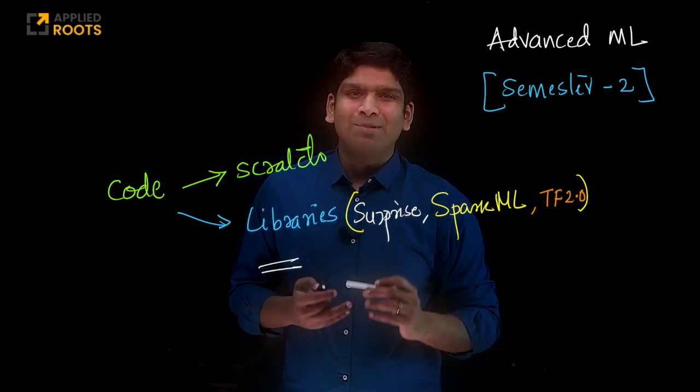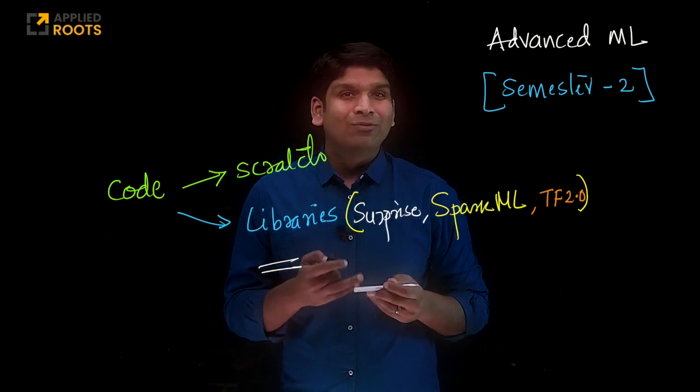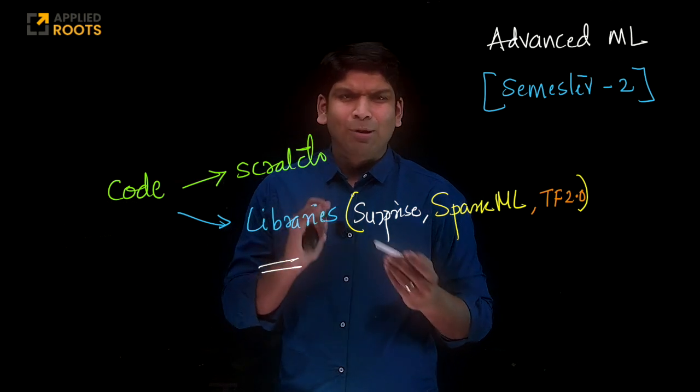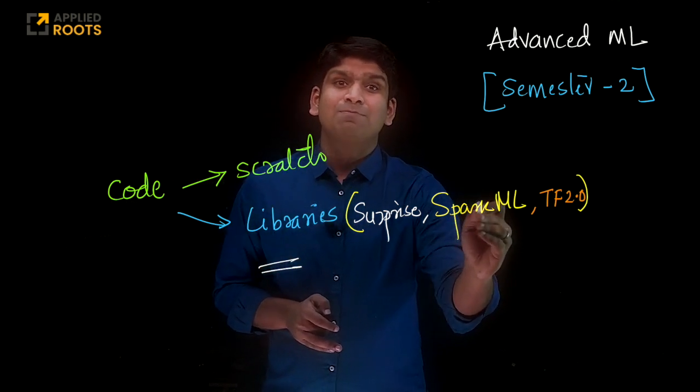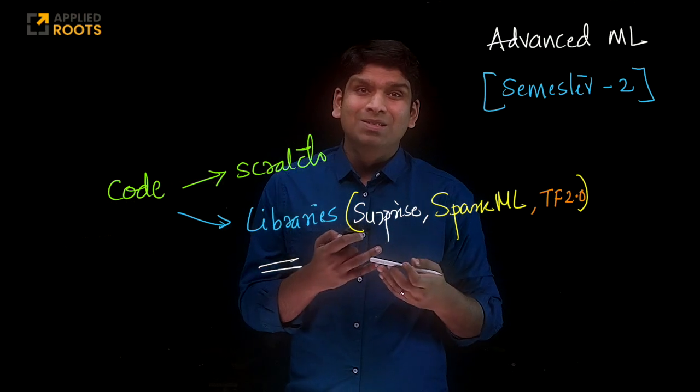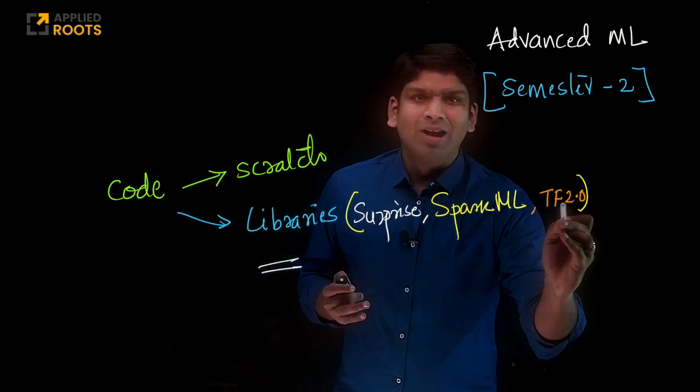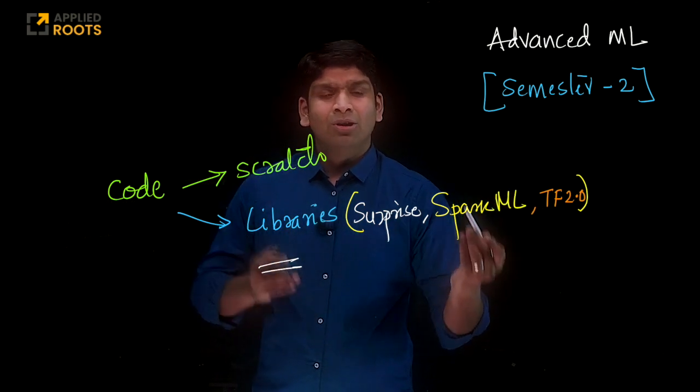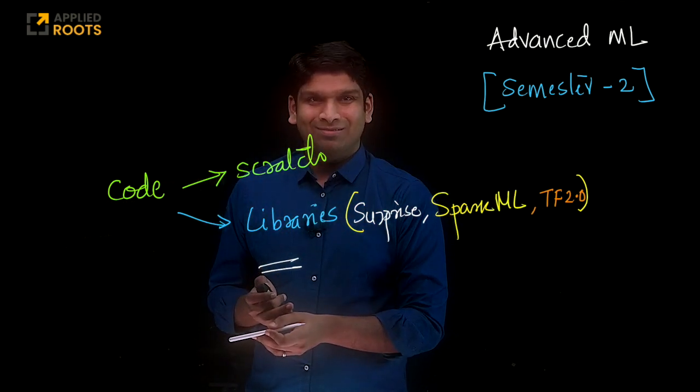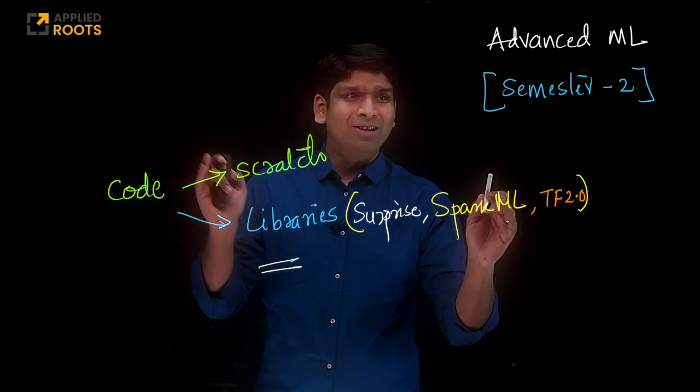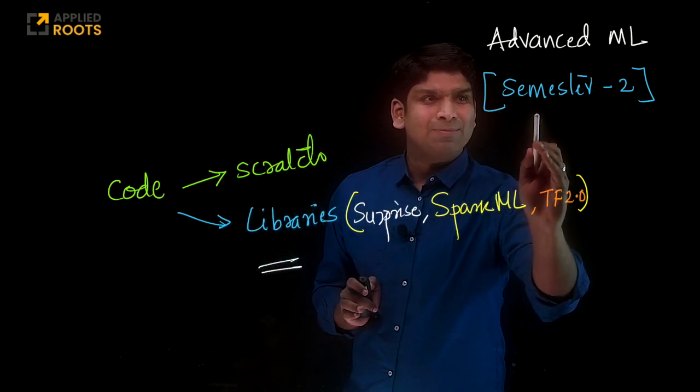There is a very popular library called Surprise which is often used for recommender systems. Similarly, we will see how we can use Spark ML to build recommender systems at large scale, at big data scale. We will understand the basics of TensorFlow for feed-forward networks. This is what we will cover in this course as part of semester 2.